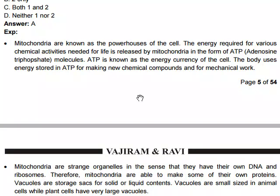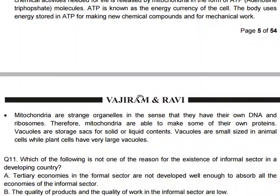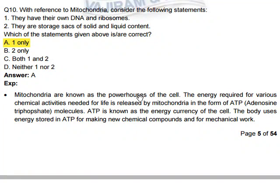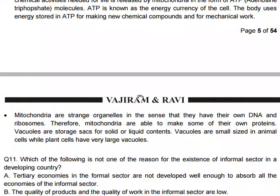ATP is also known as the energy currency of the cell. The body uses energy stored in ATP for making new chemical compounds and for mechanical work. Mitochondria are unique organelles in that they have their own DNA and ribosomes, enabling them to make some of their own proteins. Vacuoles are storage sacks for solid and liquid contents — these belong to vacuoles, not mitochondria. Vacuoles are small in animal cells but very large in plant cells. Therefore, statement one only is correct.